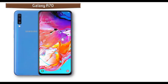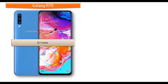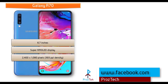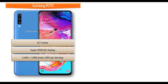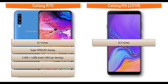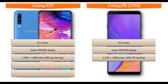Looking at the display, the Galaxy A70 has a 6.7-inch screen with Super AMOLED display at a resolution of 2400 x 1080 pixels and 393 ppi pixel density. Whereas Galaxy A9 is a 6.3-inch device with Super AMOLED display and a resolution of 2220 x 1080 pixels and 392 ppi pixel density.